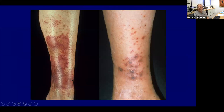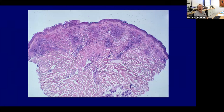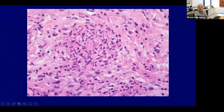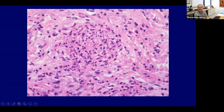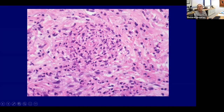Under the microscope in LCV, you see inflammation targeting blood vessels with extravasated erythrocytes at low magnification. At higher magnification: fibrin in blood vessel walls, thrombosis of the lumen, neutrophils, and nuclear dust. On immunofluorescence within the first 24–48 hours, you can see positive IgA — especially in Henoch-Schönlein purpura — as well as IgG, IgM, C3, fibrinogen, and fibrin. If you get it too early or too late, the immunofluorescence may be artifactually negative.